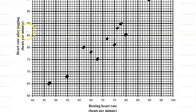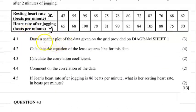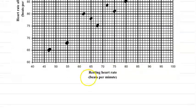Heart rate after jogging on the y-axis. Draw the scatter plot of the data given on the grid provided on diagram sheet one. As you can see I've already completed it for you. Let's go and check how do we do this. 47 and 65, so that's 45, 46, 47 and 65. So that's our first coordinate.